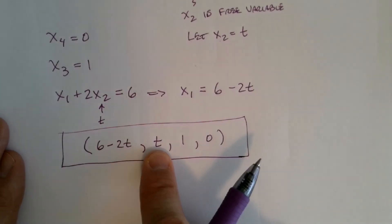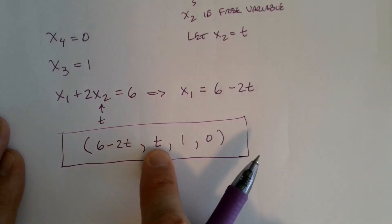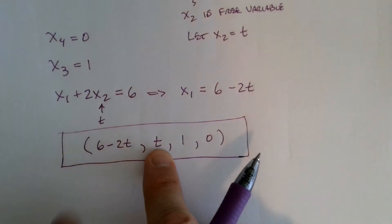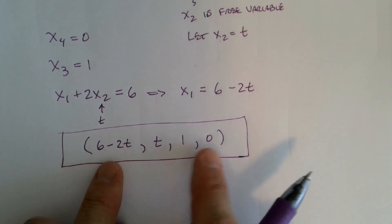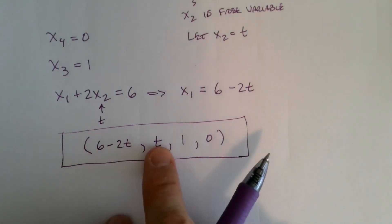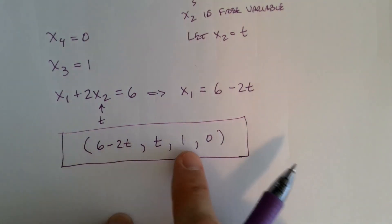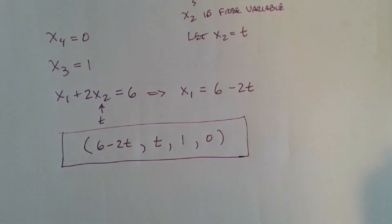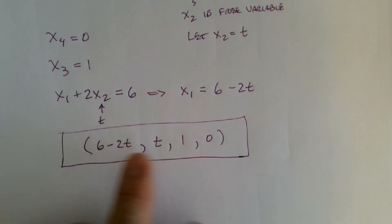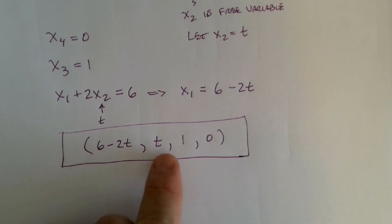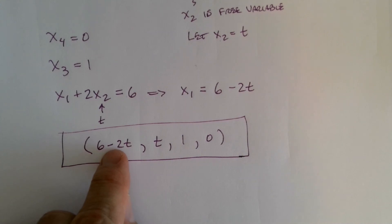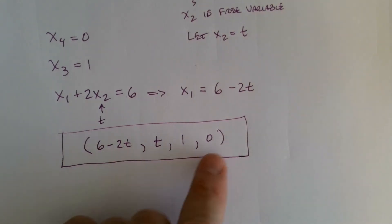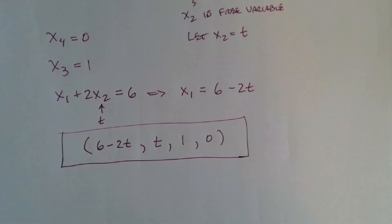The solution written as an ordered four-tuple is: (6 − 2t, t, 1, 0), where t is any real number — infinitely many solutions. For example: if t = 0, one solution is (6, 0, 1, 0). If t = 1, we get (4, 1, 1, 0). If t = −1, we get (8, −1, 1, 0). That's the solution to the system.